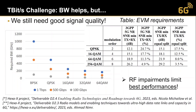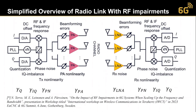RF impairments limit the best performance we can achieve in the system. Here is a simplified overview of a radio link with some RF impairments, using a phased array assumption for transmitter and receiver. We see many different RF building blocks that impact signal quality. First, we have D-to-A converters that cause quantization noise. We may have RF and IF frequency responses, phase noise from the local oscillator, IQ imbalance, beamforming errors, and a power amplifier that is typically non-linear and causes distortion to the signal.